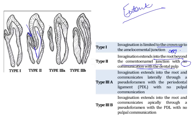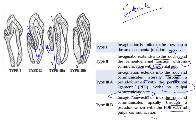Type 3A extends into the root and communicates laterally through a foramen with the PDL but there is no pulpal communication. Type 3B extends into the root and communicates apically to the PDL, also with no communication to the pulp. The main difference between Type 3A and Type 3B is that in Type 3A the invagination communicates only through a pseudoforamen, whereas Type 3B communicates completely only at the apical region.